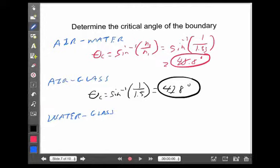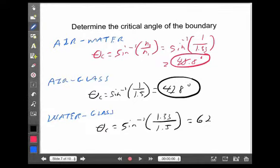Now, water glass. Okay, well, water is 1.33 and glass is 1.5. So, if I'm going to do the critical angle, I have to take the smaller number, 1.33, over the larger number. And that gives me about 62.5 degrees.